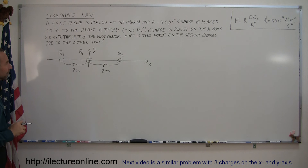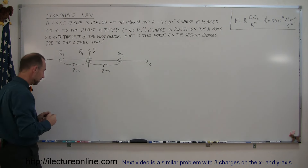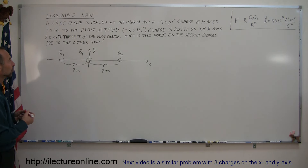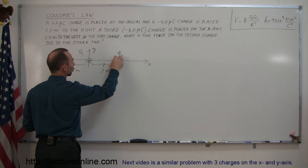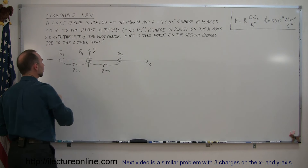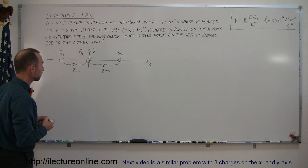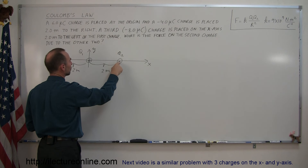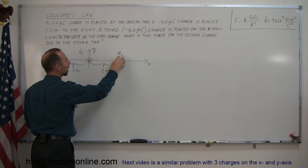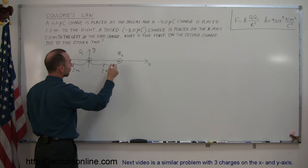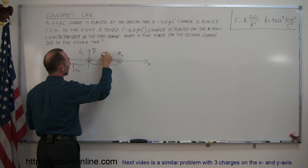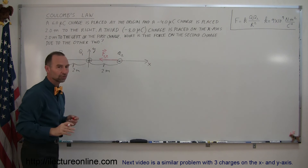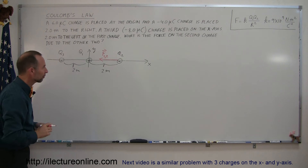This distance here is 2 meters, and this distance is also 2 meters. Now, where do we start? I always recommend that the first thing you do is draw vectors representing the forces acting on the charge in question. So we're trying to figure out what the total net force is on this charge due to the presence of these other two. q1 is positive, q2 is negative, so they attract each other, which means the force on q2 due to q1 is to the left. So we have a force in this direction — this is F12, indicating the force between q1 and q2.